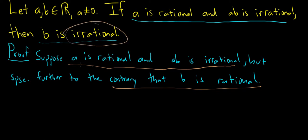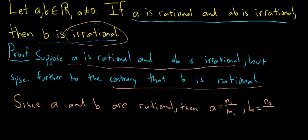Well now we have that A is rational and B is rational. So since A and B are rational, that means we can write them as ratios of integers. Then A is equal to N1 over M1 and B is equal to N2 over M2, where